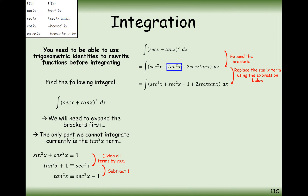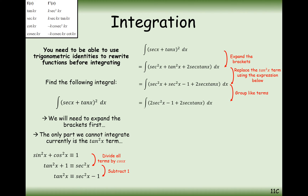We turn tan squared into sec squared minus 1. Now we can group like terms together — we've got two sec squareds — and then integrate term by term. Sec squared integrates back to tan, so it'll be 2 tan. Minus 1 becomes minus x. And 2 sec x tan x is in the formula booklet, so we integrate that back to 2 sec x plus c.